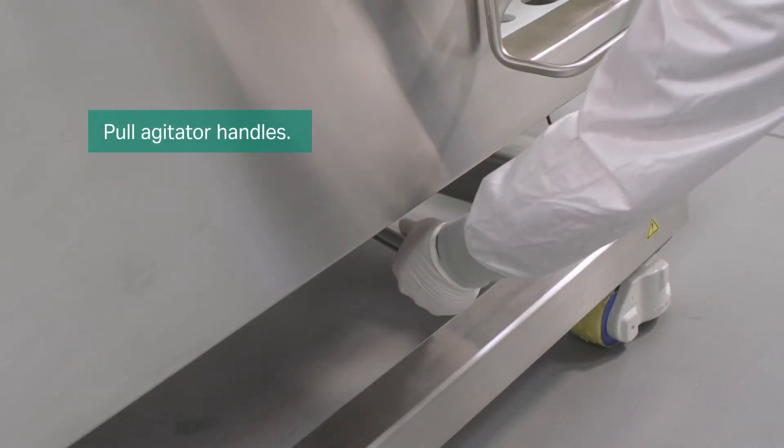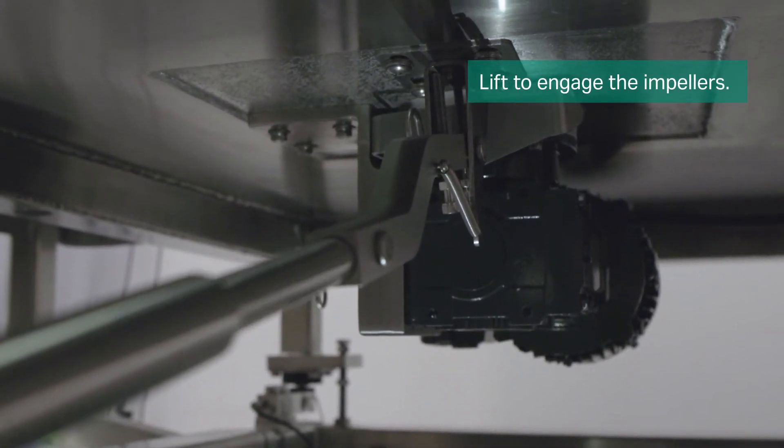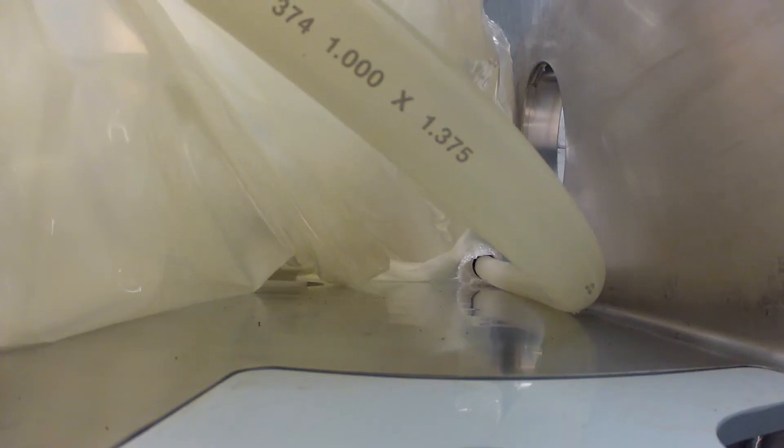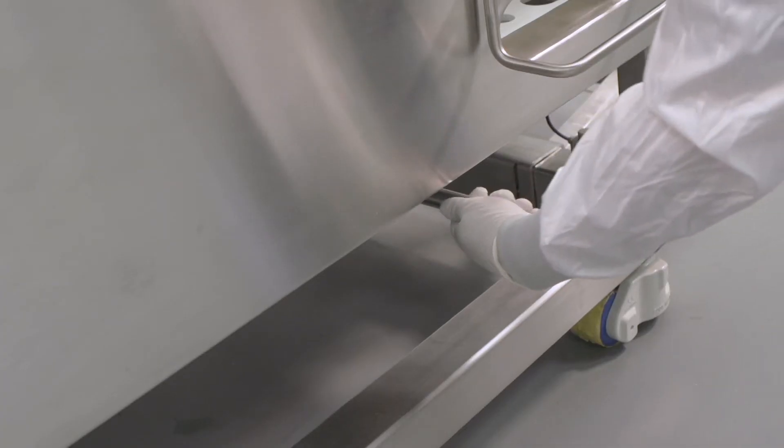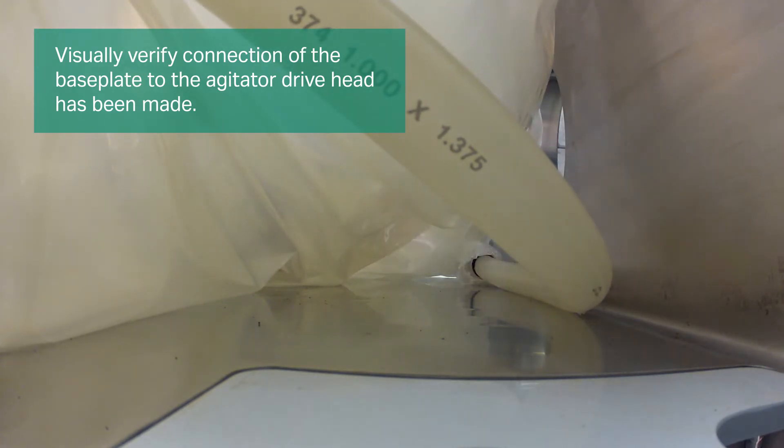To engage the impellers, pull the agitator handles completely from under the mixer and lift. Lower the protective collar. A click is heard when the base plate connects with the agitator drive head. Visually verify that the connection has been made.